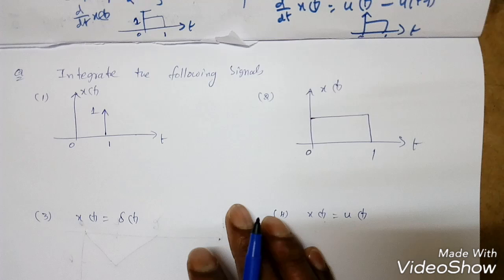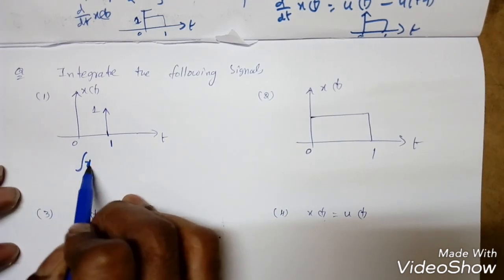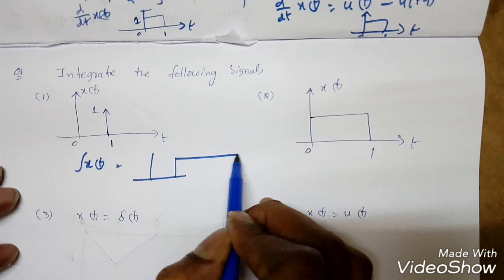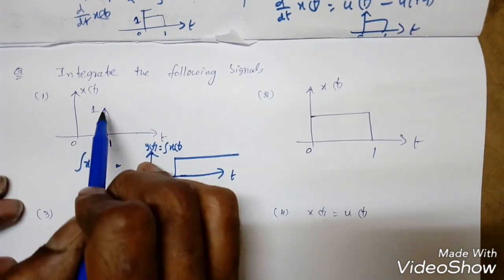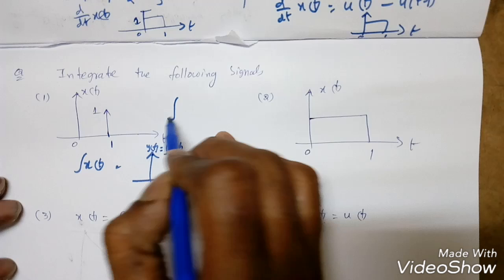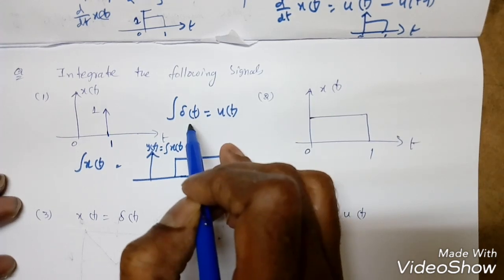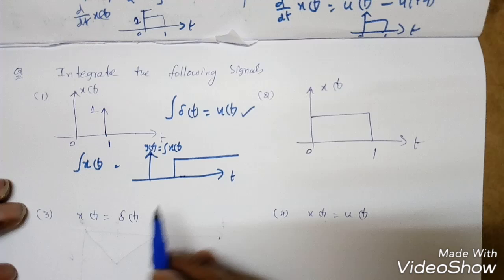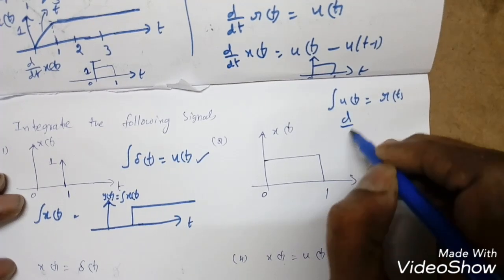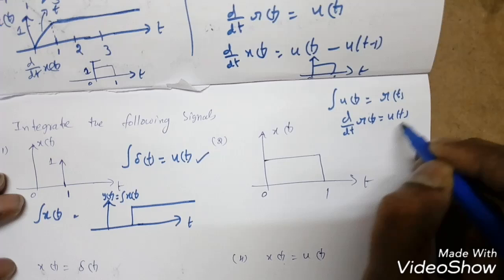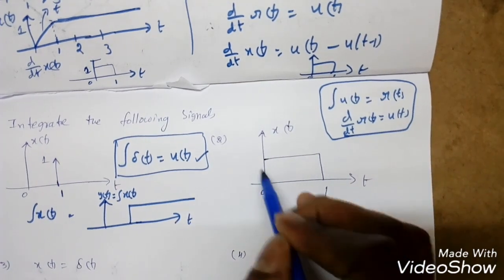Next we see integration of signals. Key pairs to remember: integrating δ(t) gives u(t); differentiating u(t) gives δ(t). Integrating u(t) gives the ramp r(t); differentiating r(t) gives u(t). These pairs are fundamental.